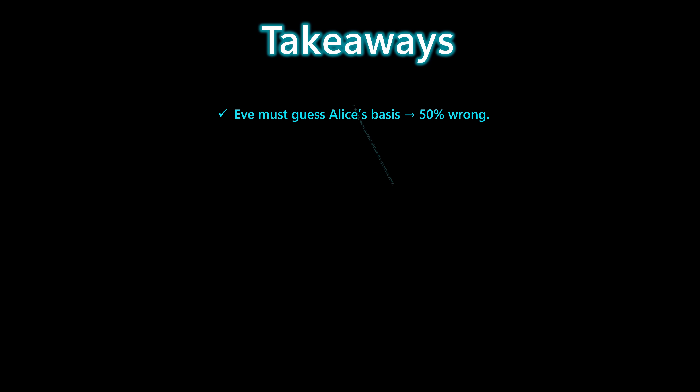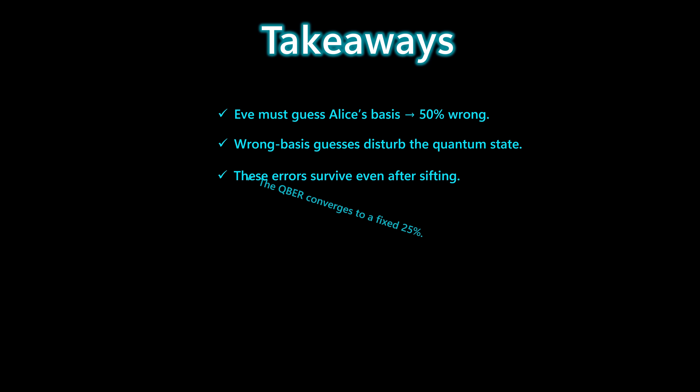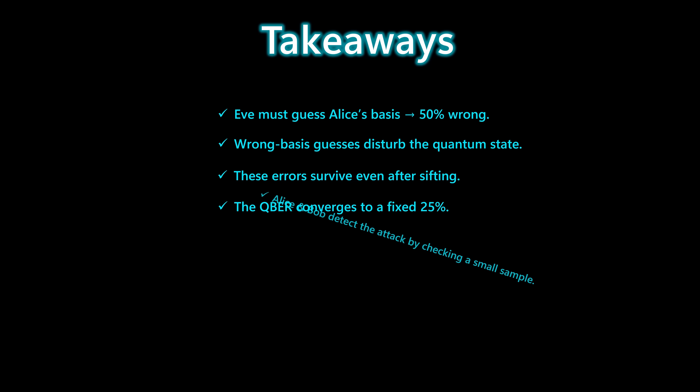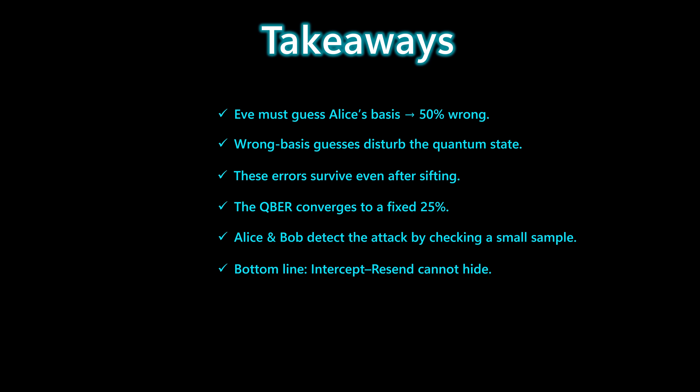Here are the key points to remember. Eve has to guess the basis for every qubit, and half of those guesses are wrong. Those wrong guesses disturb the quantum state, and the disturbance survives even after Alice and Bob sift their key. As the key grows, the error rate locks onto 25%, a clear signature of the intercept-resend attack. By comparing just a small sample of their sifted bits, Alice and Bob immediately detect Eve's presence. That's why intercept-resend should always be recognized.